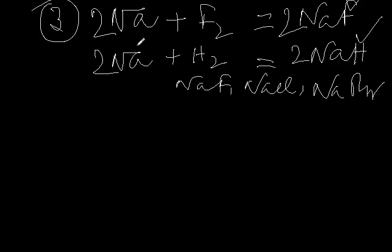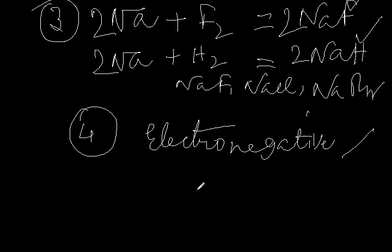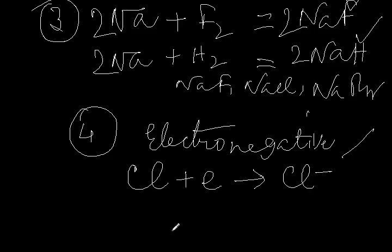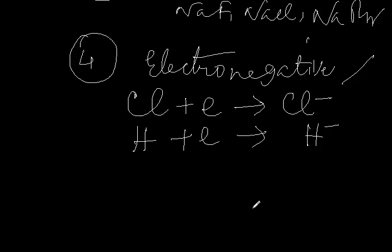Argument number 4: when hydrogen reacts with alkali metals, hydrogen acts as an electronegative element. Just as fluorine gains one electron to form Cl⁻ ion during formation of NaCl, here the role of hydrogen is just like the role of the halogen. Considering these four arguments, hydrogen can also be placed in group 7, group 7A, with the halogens.